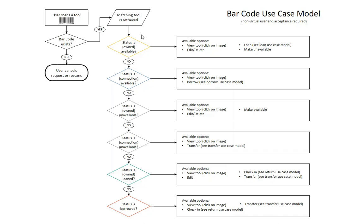If you're the owner of the tool — the construction company — and the tool is available (indicated by a yellow circle), you'll have many options: view the tool, edit it, delete it, loan it out, or make it unavailable. If you're an employee or connection to the tool owner, you'll see a blue circle indicating the tool is available, and you'll only have two options: view the tool or borrow the tool. All options are dependent upon who the owner is and what the tool status is.